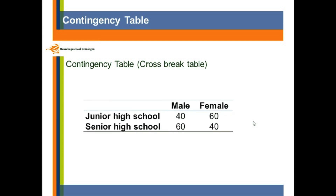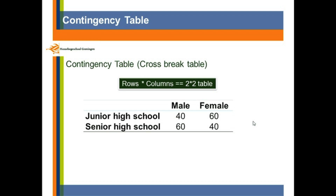For example, this table. We have male and female students. They are in junior high school and senior high schools. So we have two columns and we also have two rows. When you describe the contingency table, normally you use the rows times the columns. So in this case, we say a two by two table because we have two rows and two columns.